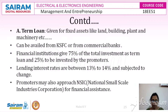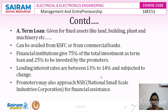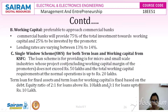Financial institutions give 75 percent of the total investment as the term loan, and 25 percent has to be invested by the promoters. Lending interest rates are between 13 to 14 percent, subject to change depending on financial conditions — it could be a floating rate. Once sanctioned, the amount is released directly to the supplier based on bills raised for plant and machinery. Promoters may also approach the National Small-Scale Industries Corporation (NSIC) for financial assistance.